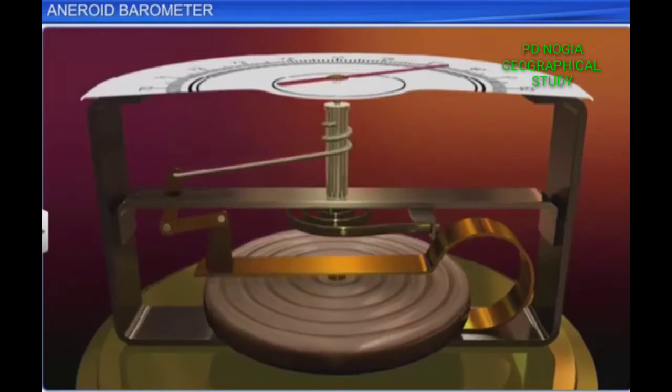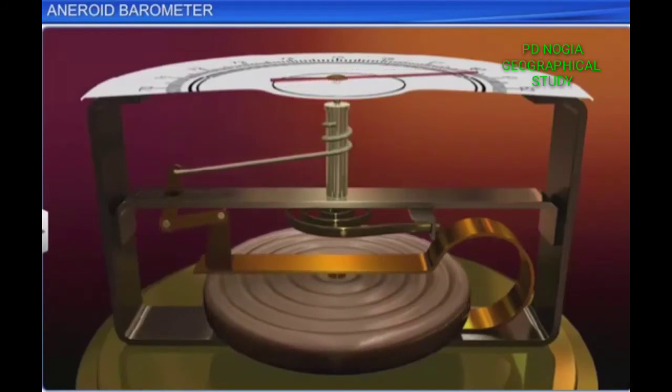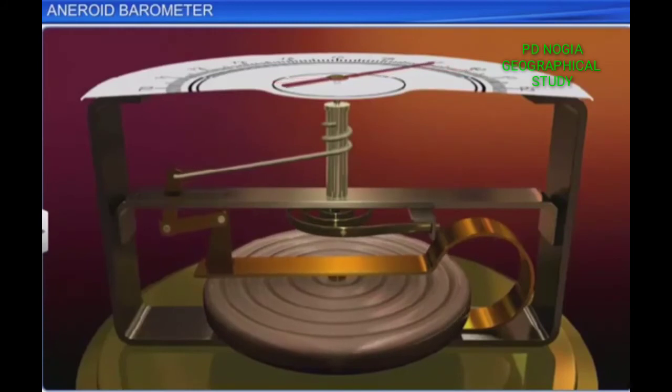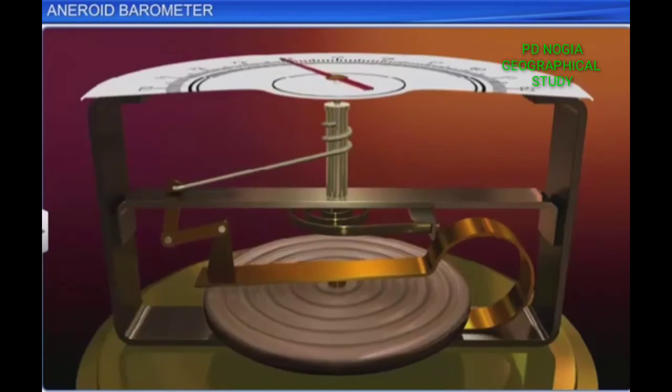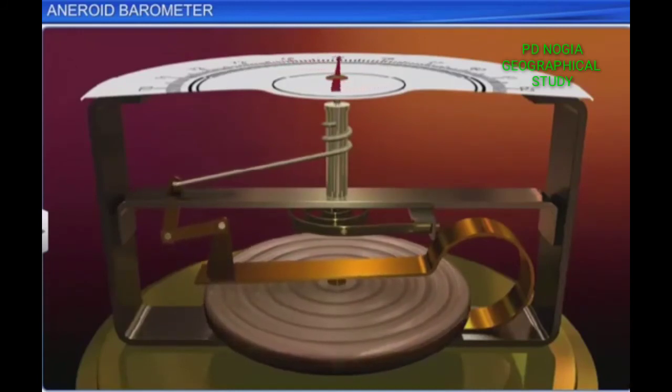The metallic chain, in turn, rotates the pulley and makes the pointer move on the scale. Since the scale is calibrated, the atmospheric pressure can be directly noted.